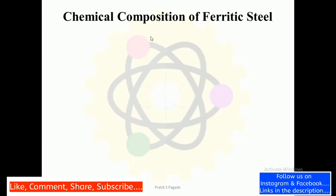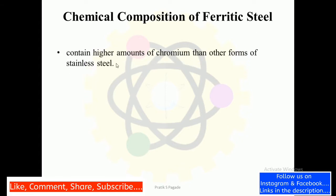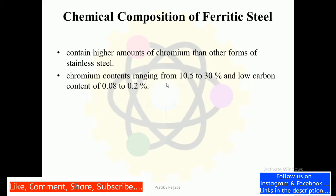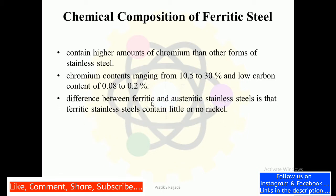Next is the chemical composition of ferritic stainless steels. It contains higher amounts of chromium than other forms of stainless steels, with chromium content ranging from 10.5 to 30 percent and low carbon content of 0.08 to 0.2 percent. A key difference between ferritic and austenitic stainless steel is that ferritic stainless steels contain little or no nickel, and they contain hardly any carbon.